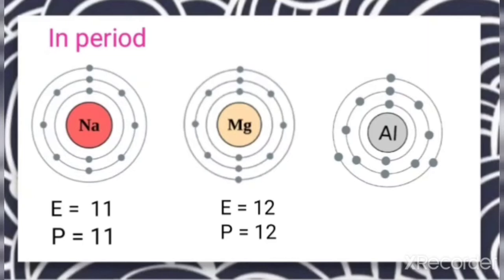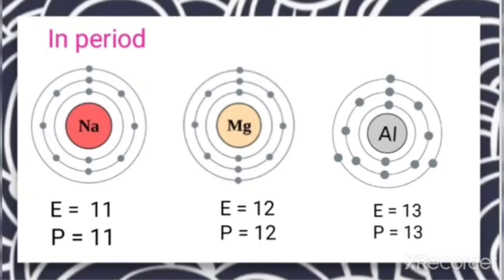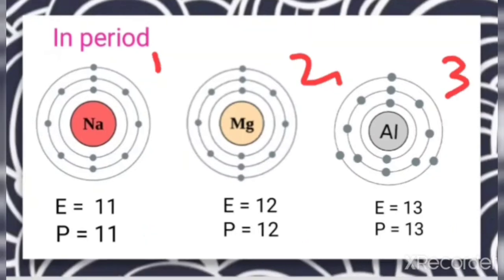For aluminium, the atomic number increases from magnesium, so the number of electrons and protons becomes 13. As the number of protons increases, the magnitude of nuclear charge increases progressively by one unit — 11, 12, 13, and so on. The number of electrons in the outermost shell is one for sodium, two for magnesium, and three for aluminium, but the inner core electrons remain the same in all these elements.